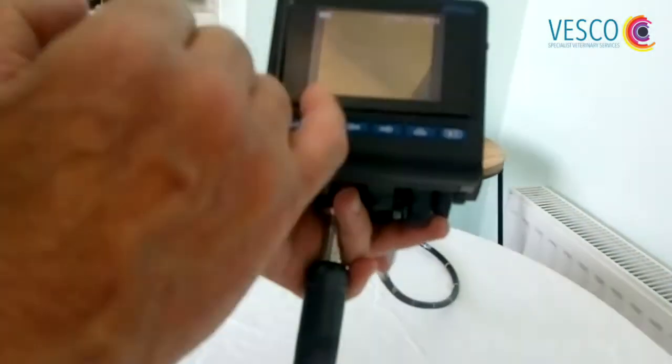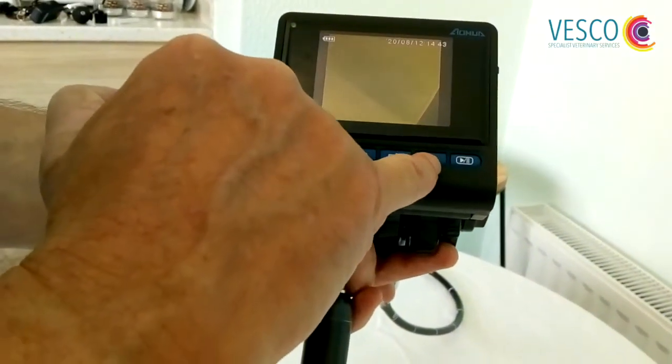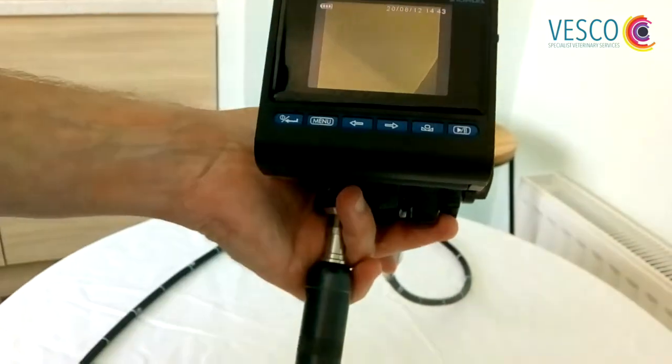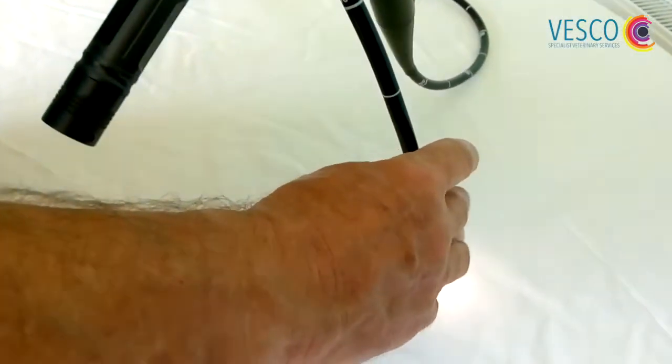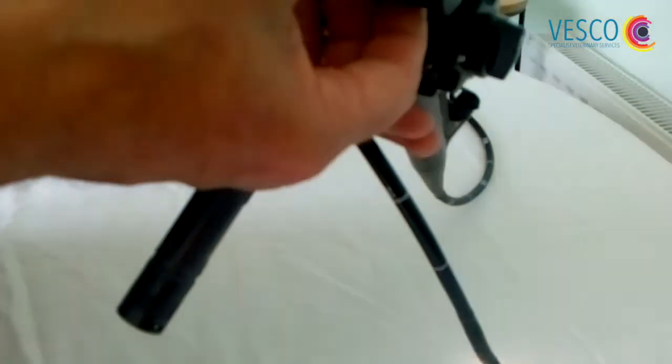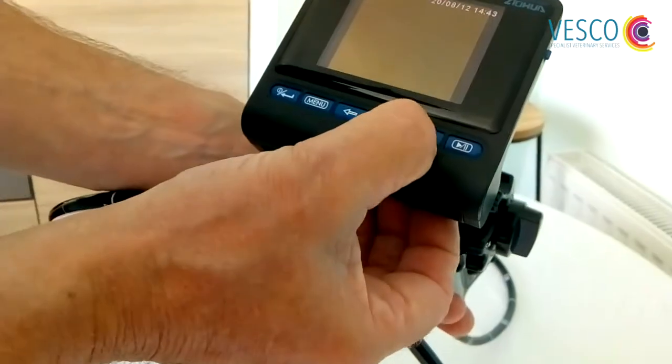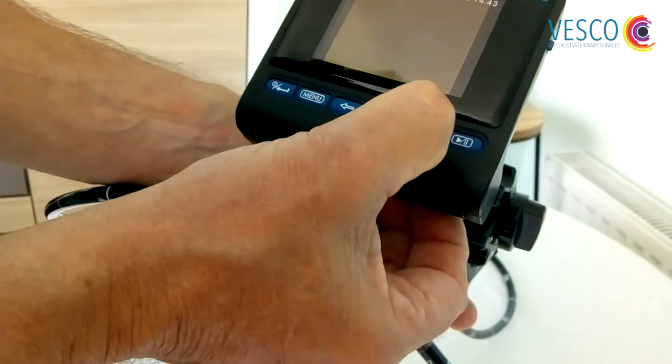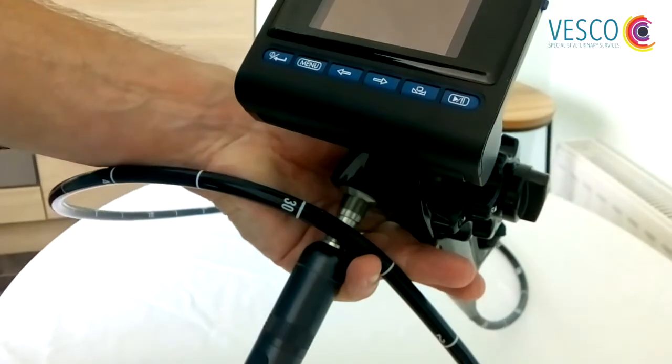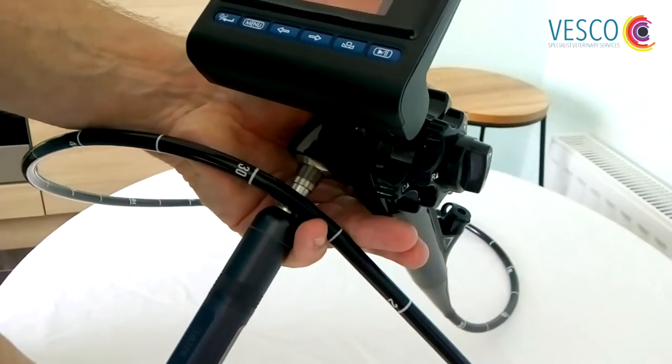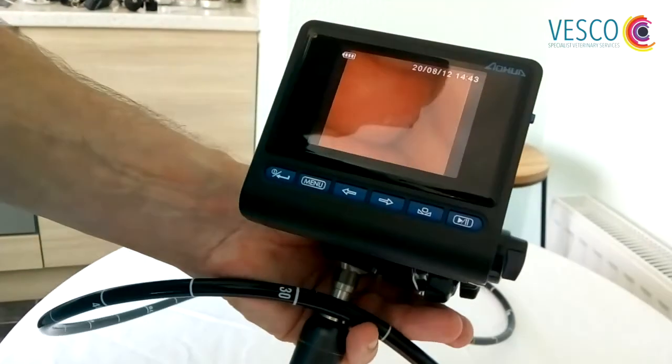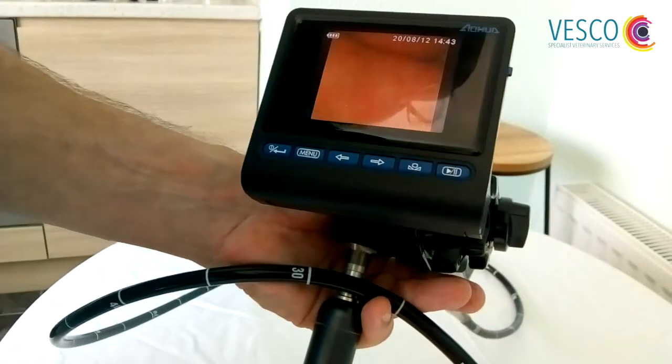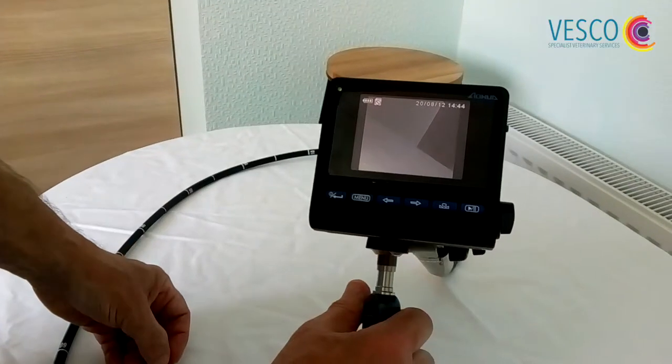We need to white balance it, so we have to tell the screen what color white is. To do that, we use this key here. Put the tip of the scope near something white, either a swab or something really white, and press and hold that button there. It goes to a gray color which is perfect, and then you can just cup your hand around or take an image, and that gives you the more natural color.